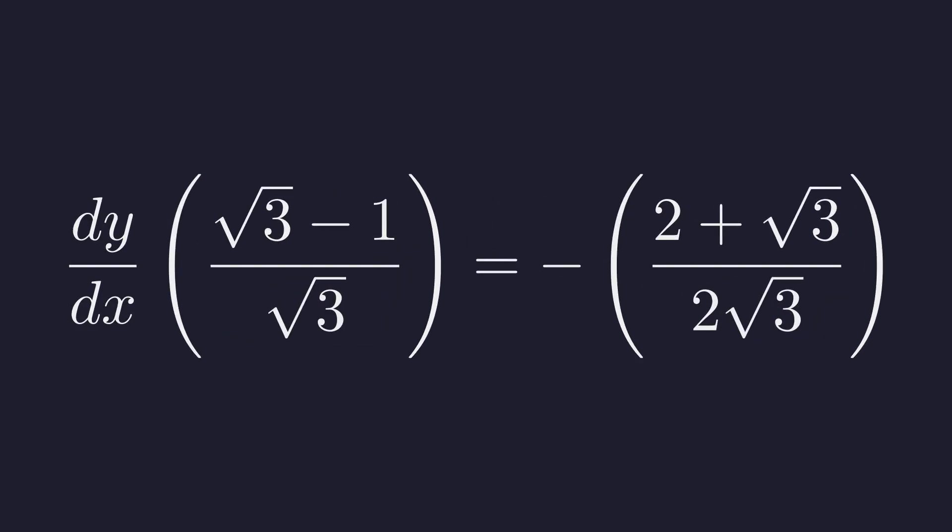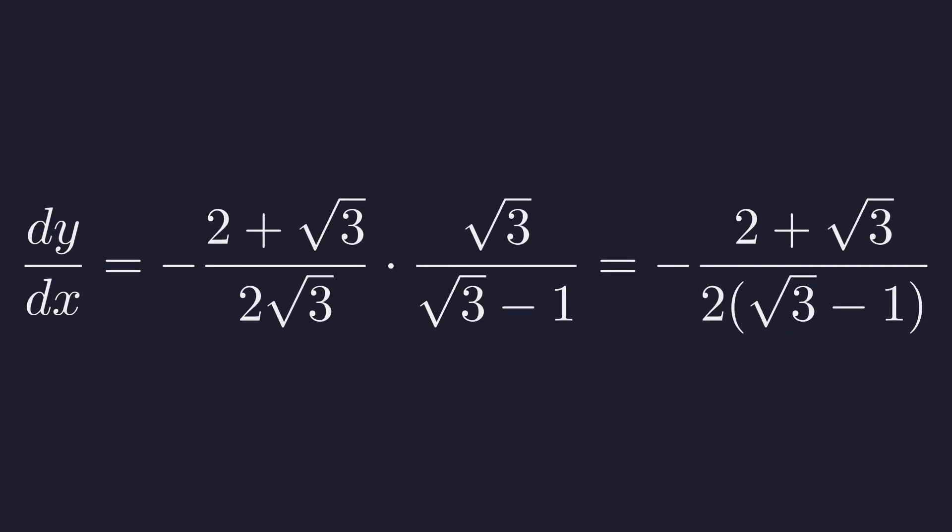To solve for dy over dx, multiply both sides by the reciprocal of the term on the left. The square root of three cancels leaving this expression. This is the correct answer, but it's not in its best form.